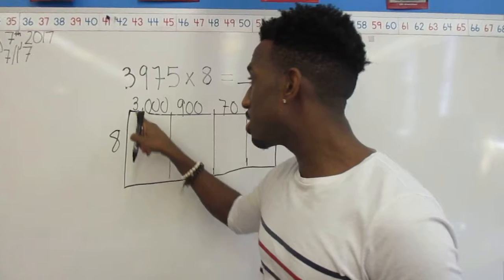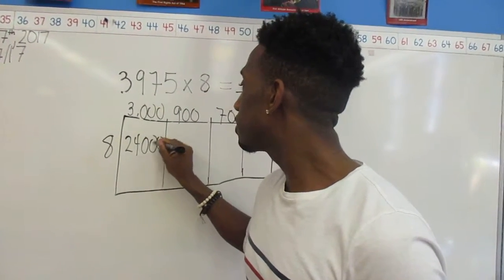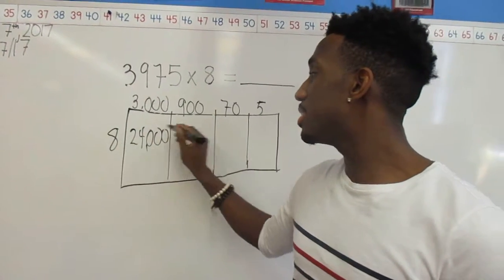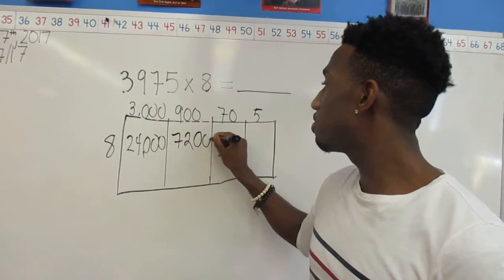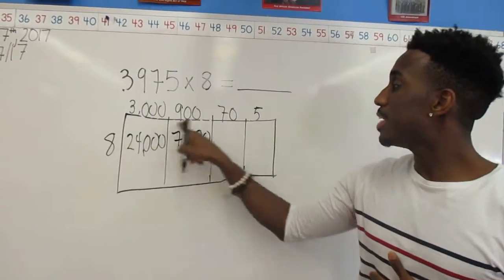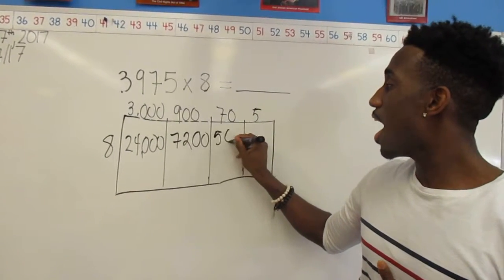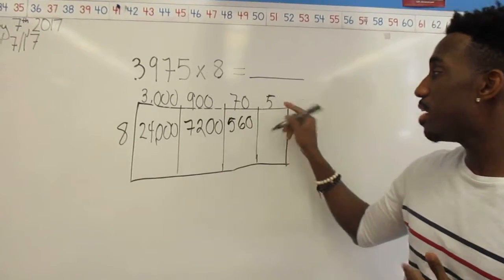So 8 times 3,000 is 24,000. 900 times 8—I know that 9 times 8 is 72, I have two zeros here, I can just add them on. 8 times 70—I know 8 times 7 is 56, I have one zero here, I can just add the zero. And 8 times 5 is simply 40.